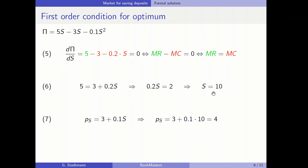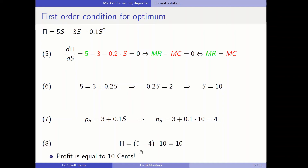To attract 10 units of savings the interest rate must be 3 plus 0.1 times 10, so the interest rate in the saving market must be set to 4 percent. Profit per unit is 5 minus 4: 5 is received in the money market, 4 is the cost per unit. Multiplying by 10 units gives a total profit equal to 10.